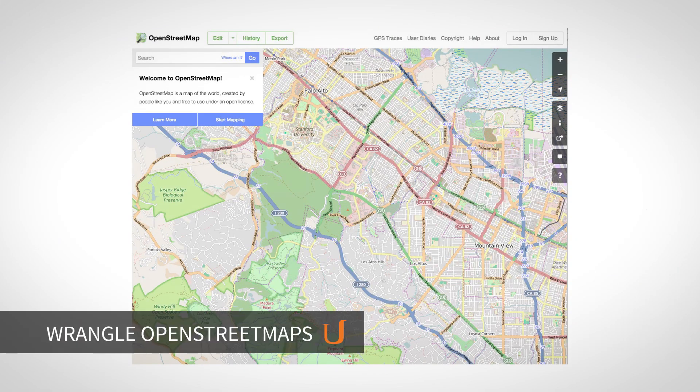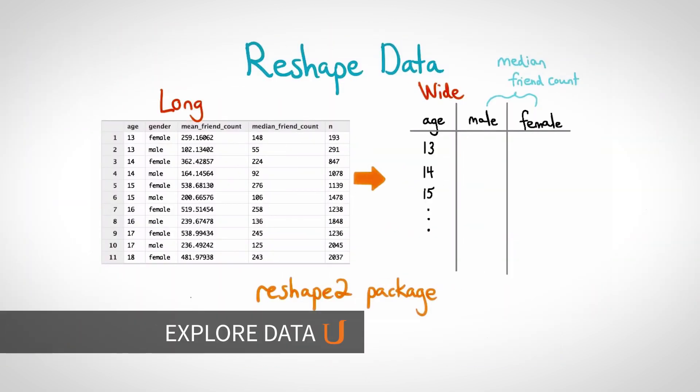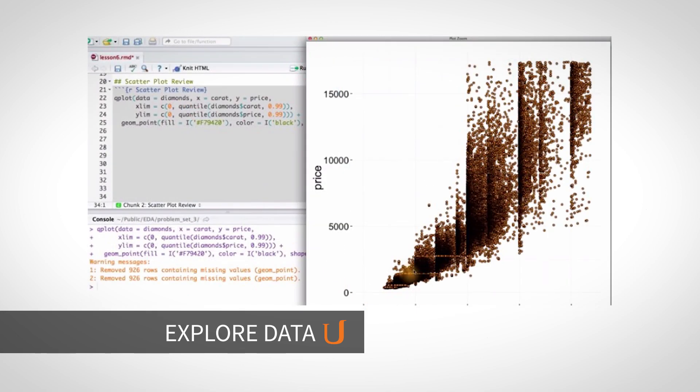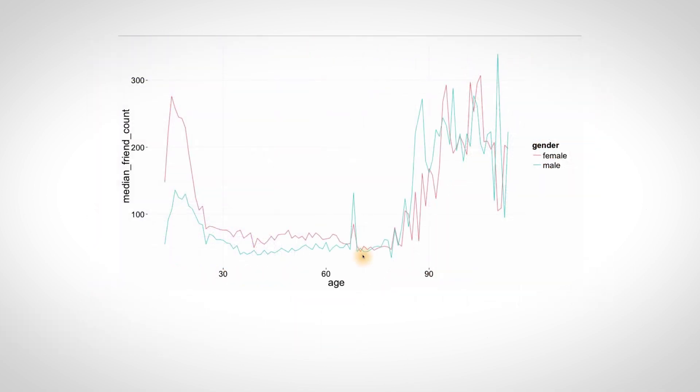Then you'll hone in on your data wrangling skills by cleaning OpenStreetMap data for a part of the world you care about. Next, you'll use exploratory data analysis techniques to build intuition about a data set, by exploring both individual variables and how those variables interact.